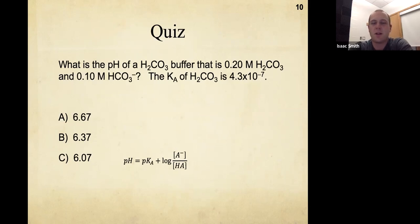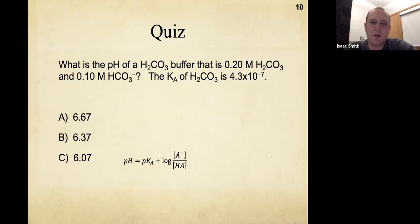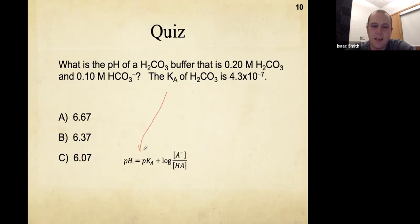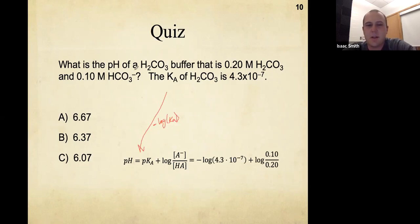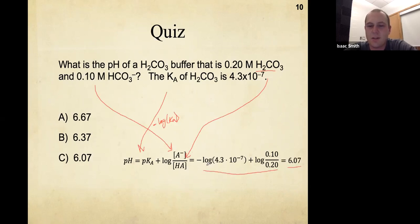What is the pH of a carbonic acid buffer that is 0.2 M carbonic acid and 0.1 M bicarbonate, given the Ka of carbonic acid? Again, convert Ka to pKa using the negative log. Then plug in the acid concentration and the conjugate base concentration into the Henderson-Hasselbalch equation and solve for pH, which gives 6.07.